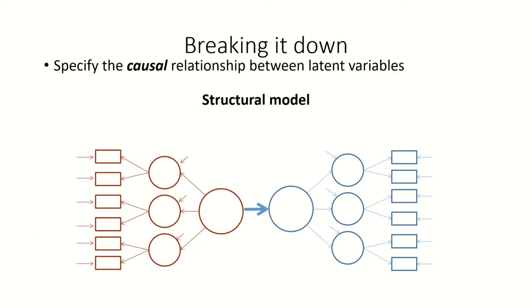In the second step then, we can test a structural model. And here we have our measurement model worked out, and now we're testing what is the causal direction between, for example, these two latent variables. So this is the cool thing about structural equation models in general. They allow us to test very complex models with real-world data.